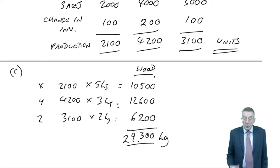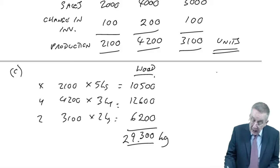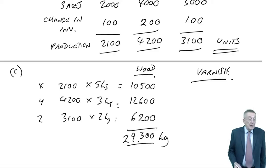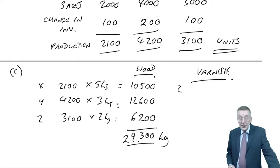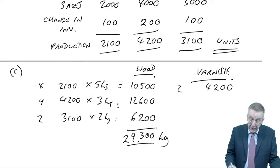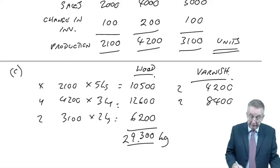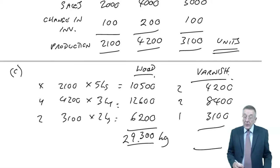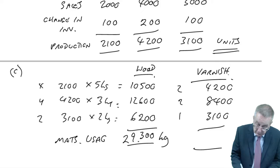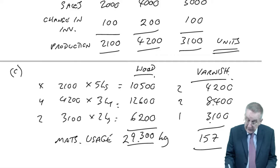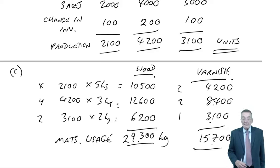Again, no dollars. Not particularly relevant. Whoever's in charge needs to know what we're going to have to use for that many kilos. What about varnish? Well, in a similar sort of way, varnish for X is 2 litres, so 2,100 units at 2 litres is 4,200 in total. Product Y needs 2, so 4,200 times 2 is 8,400. As for Z, 1 litre, 3,100. So the total materials usage, I think 15,700 litres.